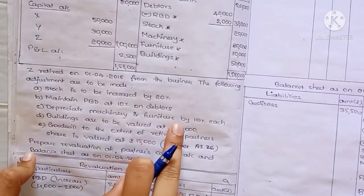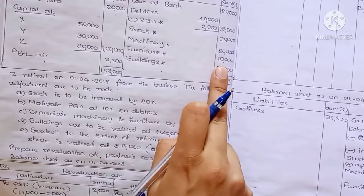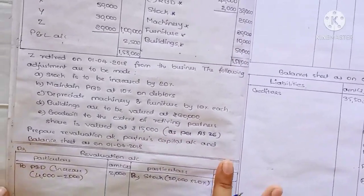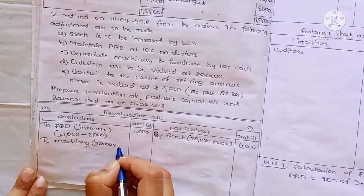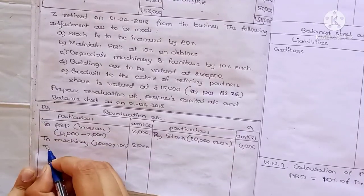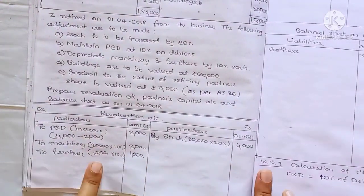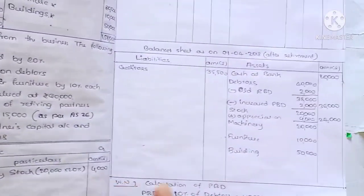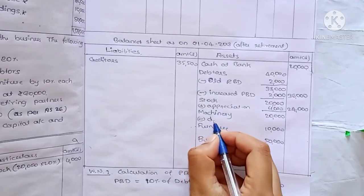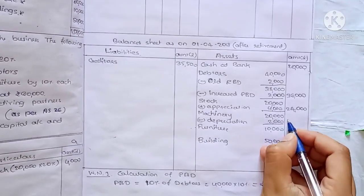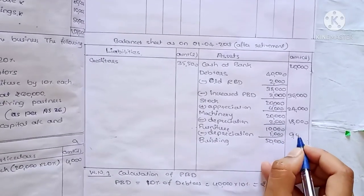Next, depreciate machinery and furniture by 10% each. Machinery is 20,000 into 10% equals 2,000, and furniture is 10,000 into 10% equals 1,000. Depreciation means loss for us, so debit the revaluation account. Asset side: machinery minus depreciation 2,000 gives 18,000 in the outer column, and furniture minus depreciation 1,000 gives 9,000.